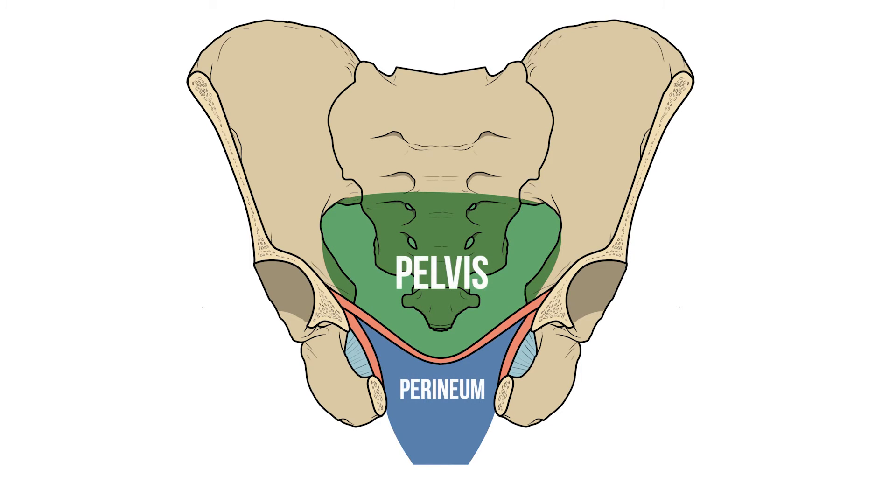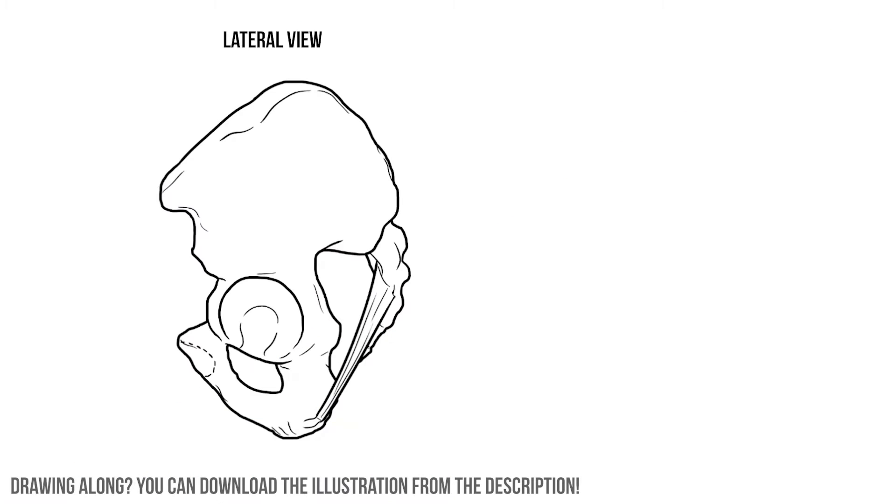This means the borders of the perineum are formed by the pelvic outlet, that opening at the bottom of the pelvis. So to draw out the perineum we need to start with an inferior view looking up into the outlet.